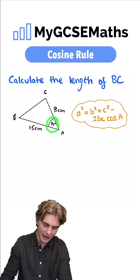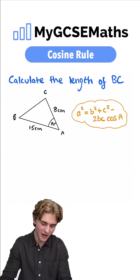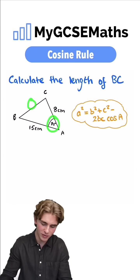We're given an angle and the two sides either side of that angle and we want to find the size of the third side length which conveniently is opposite our angle.